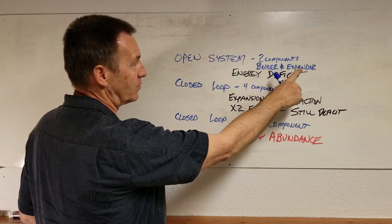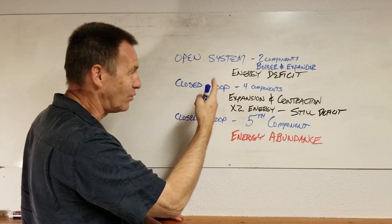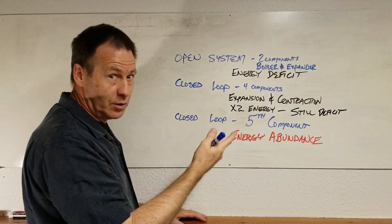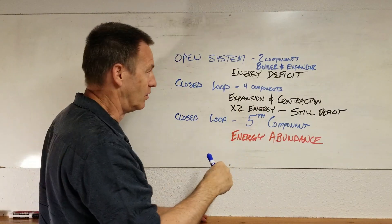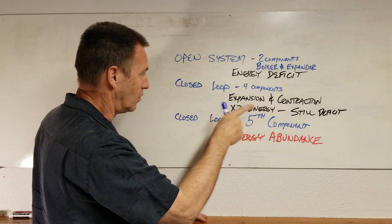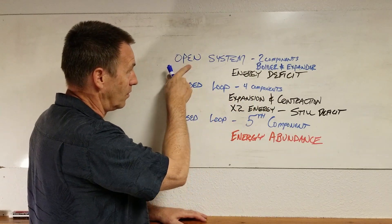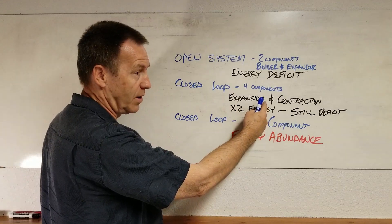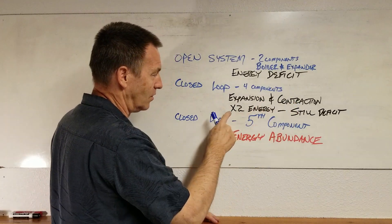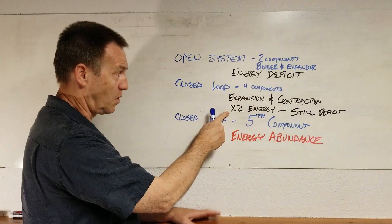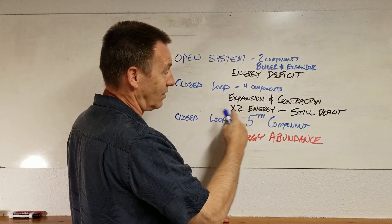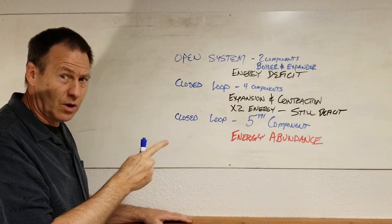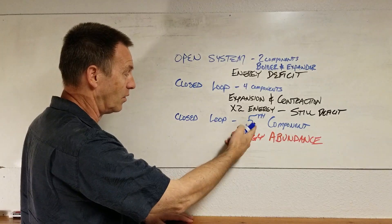The open system has two components: the boiler and the expander — characterized as energy deficit. The closed steam loop has four components; you should be able to list them off. The importance of the closed loop over an open system is that not only are we capturing work off the expansion, but we're also taking work off the contraction. So this doubles our energy. But even at two times the energy, we're still energy deficit. So the reason you're still watching this video is to learn about the fifth component, which opens up energy abundance.